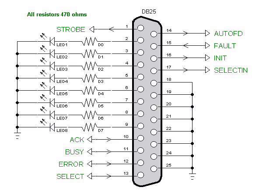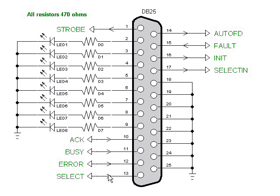Let's take a close look at the DB25 connector as you see here. It is tilted up 90 degrees, but if you look at the printer connector from the back of your PC you will see this. Note that we have 8 LEDs on the data port. Here is a strobe — that is an output connection — as are pins 14, 16, and 17. Pins 10, 11, 12, 13, and 15 are additional inputs. The remaining pins 18 through 25 are all ground.